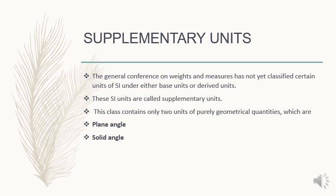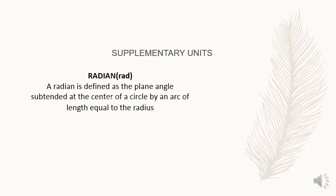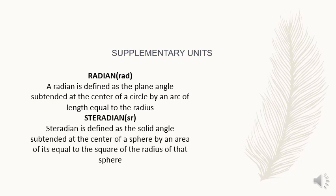Number one is radian. A radian is defined as the plane angle subtended at the center of a circle by an arc of length equal to the radius. And second is steradian. Steradian is defined as the solid angle subtended at the center of a sphere by an area of its surface equal to the square of the radius of that sphere.